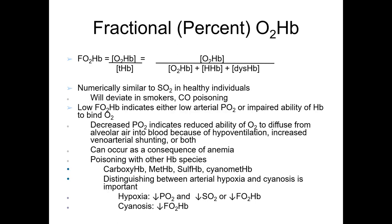A low fractional percent of oxygenated hemoglobin indicates either low arterial partial pressure of oxygen or impaired ability of hemoglobin to bind oxygen. Decreased pO2 indicates reduced ability of oxygen to diffuse from alveolar air into the blood due to hypoventilation, increased venous-arterial shunting, or both. It can also occur as a consequence of anemia or poisoning with other hemoglobin substances such as carboxyhemoglobin, methemoglobin, sulfhemoglobin, or cyanomethemoglobin. Distinguishing between arterial hypoxia and cyanosis is important: hypoxia shows a decrease in pO2 and SO2 or fO2Hb, while cyanosis typically shows only a decrease in fO2Hb.